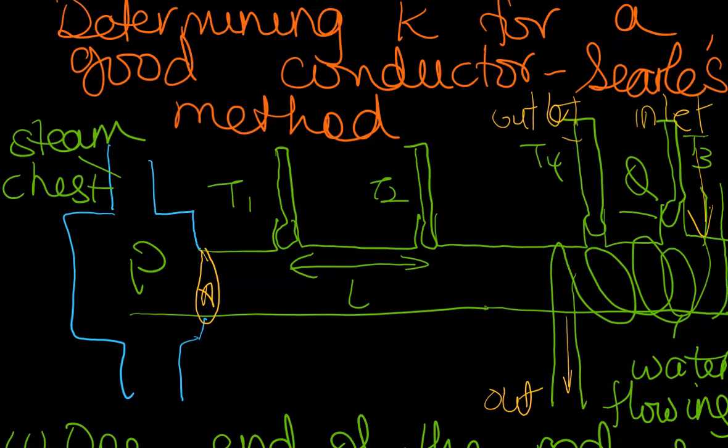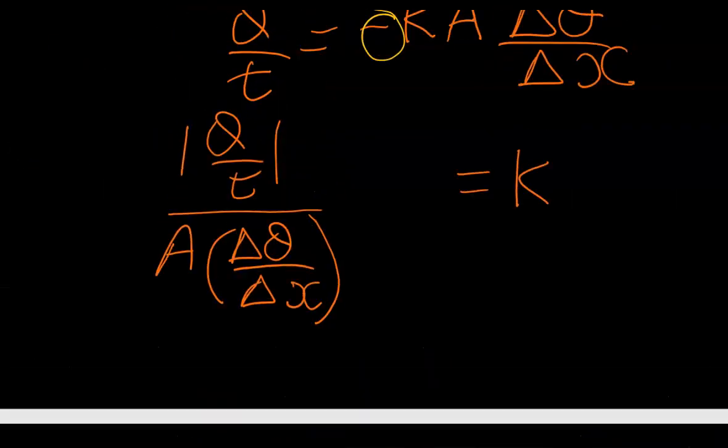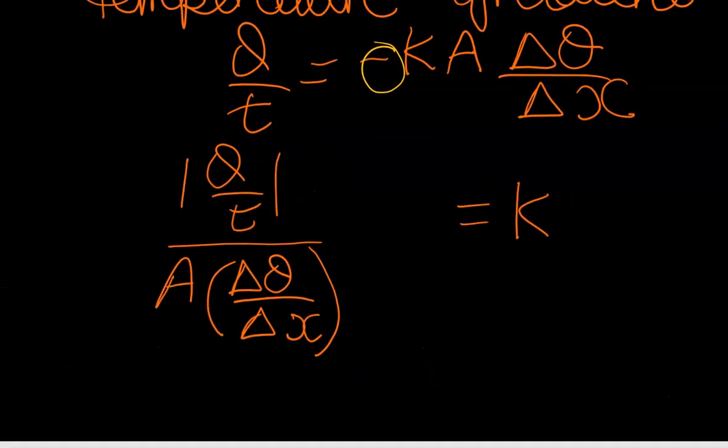Now for that to take place, let's go back here to look at the variables that we needed. So if I want to get K, I need to get Q over t. I put the modulus on because you are not interested in its negative value, you just want the magnitude.